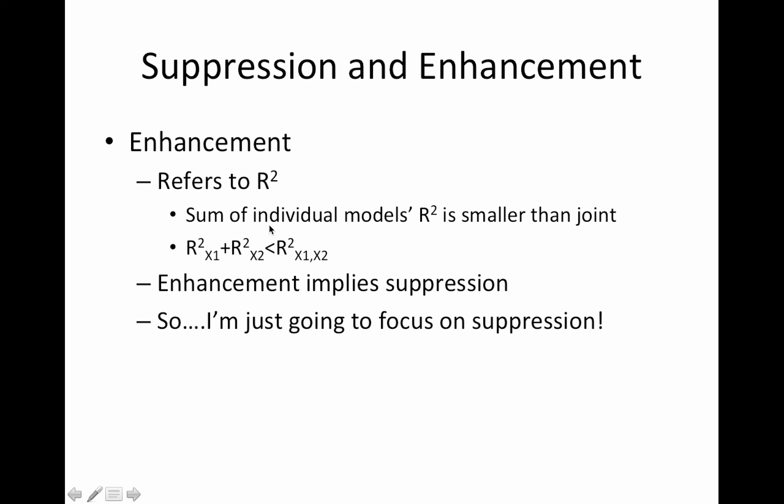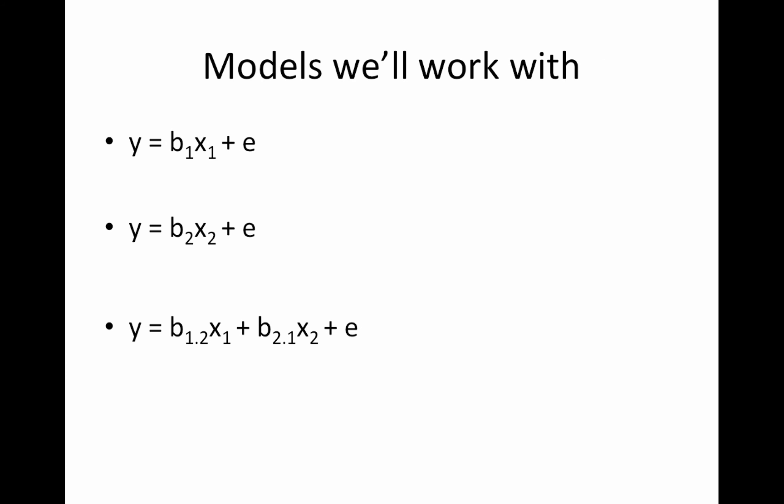Enhancement refers to R-squareds, from the model fit. The sum of individual models R-squared is smaller than the joint. Typically you would think that these individual model R-squareds would sum up to equal the joint. That would only occur if X1 and X2 were independent. But sometimes the sum of these R-squareds, what they each explain on their own, is less than what they explain together, and that is called enhancement. Enhancement implies suppression. It implies that one covariate is suppressing some unuseful part of another covariate. Since these two are related, and to avoid further confusion, I'm only focusing on suppression here.